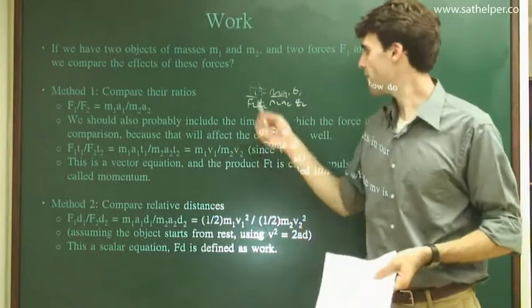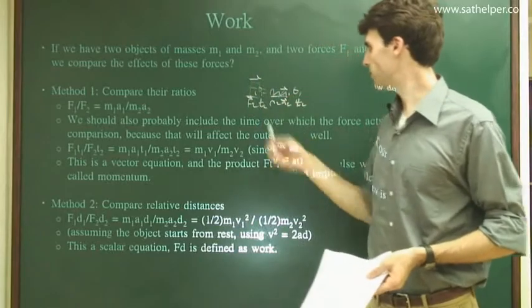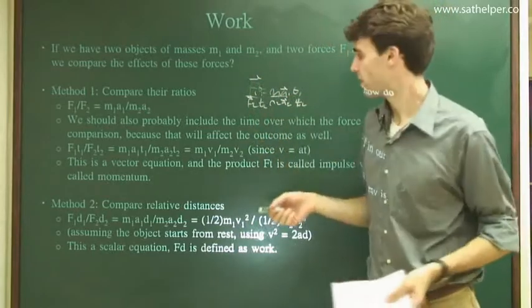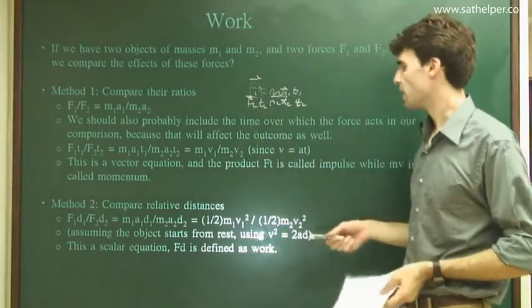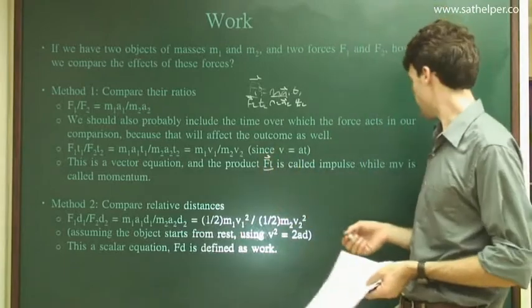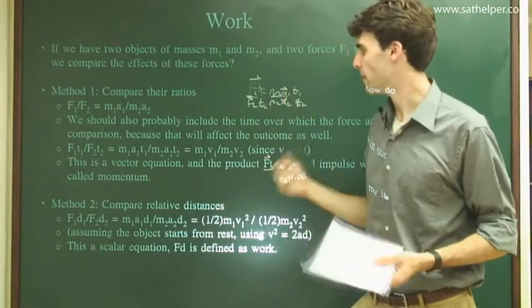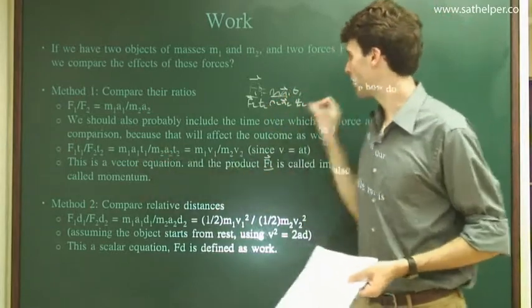So now we have Ft, vectors. We have vectors multiplied by scalars, so therefore we have a vector equation. The product of Ft is called impulse, and MV here is called momentum. We can also write this, V equals AT, we know some kinematics.